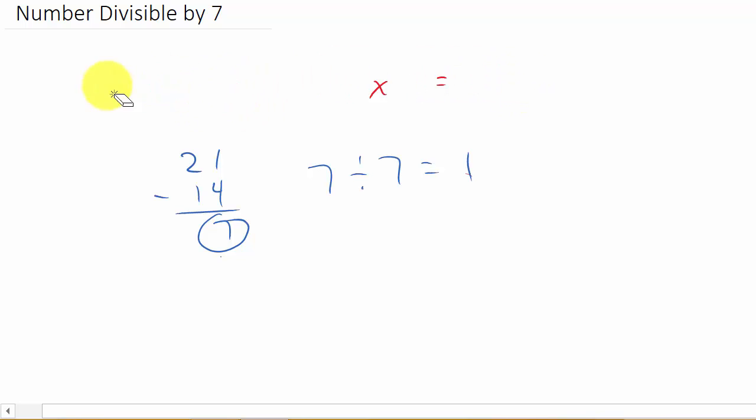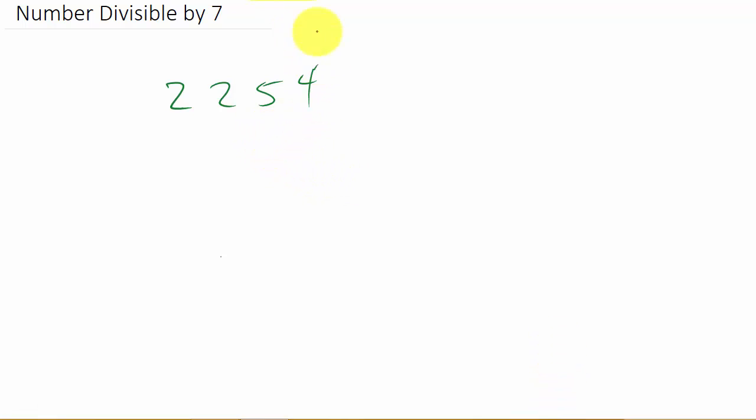So let's take a look at one more example. We'll get a little bit bigger number: 2,254. So remember, you take the last digit.